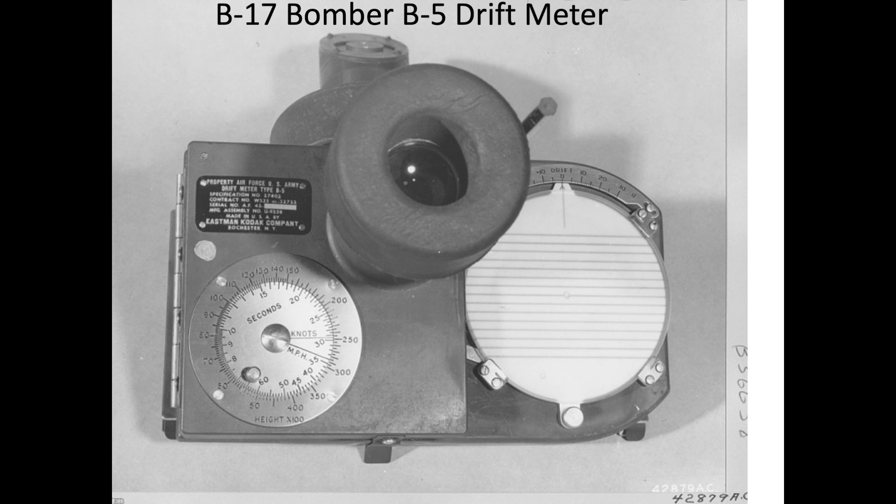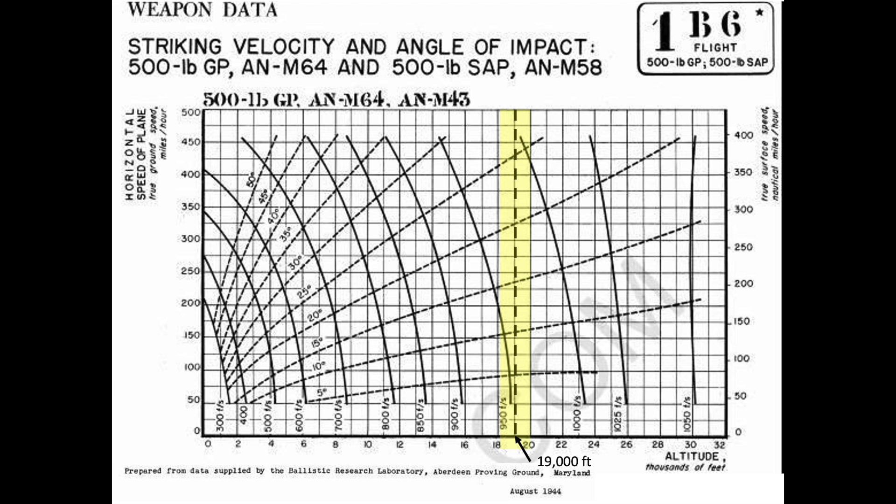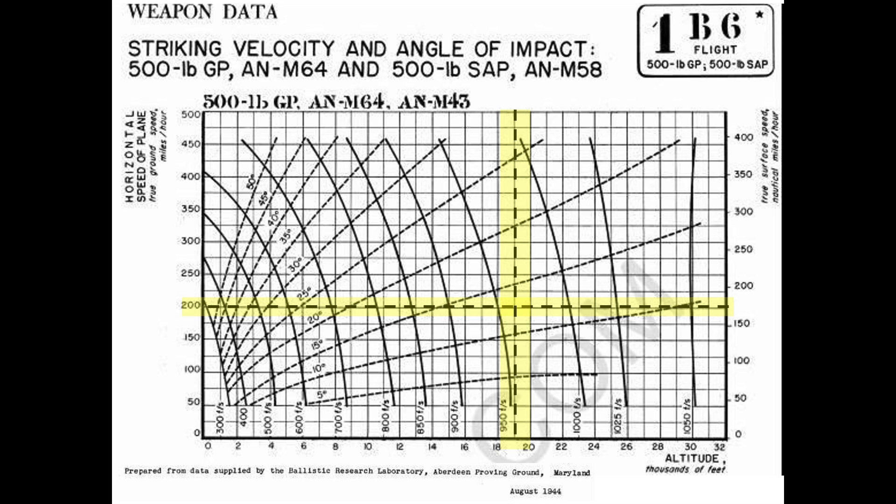The plane's ground speed can be obtained from the navigator's B-5 drift meter. Intersecting a 19,000-foot altitude x-axis with a 200-mile-per-hour y-axis yields a point here.